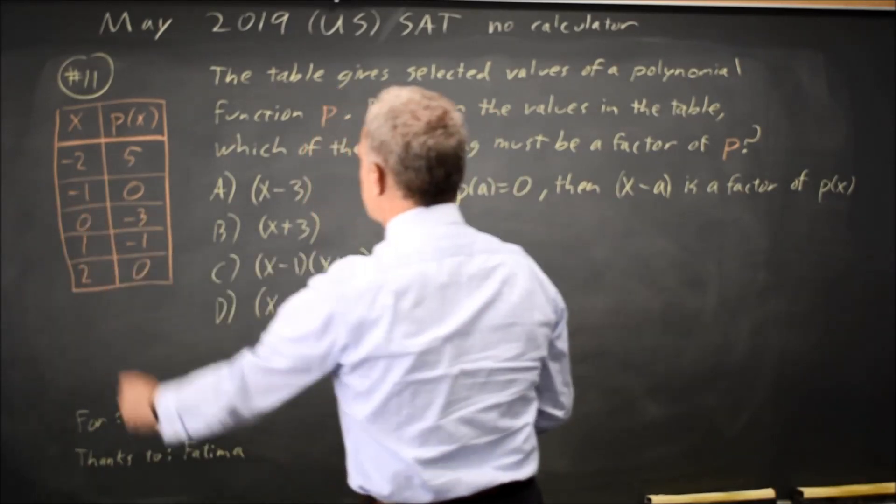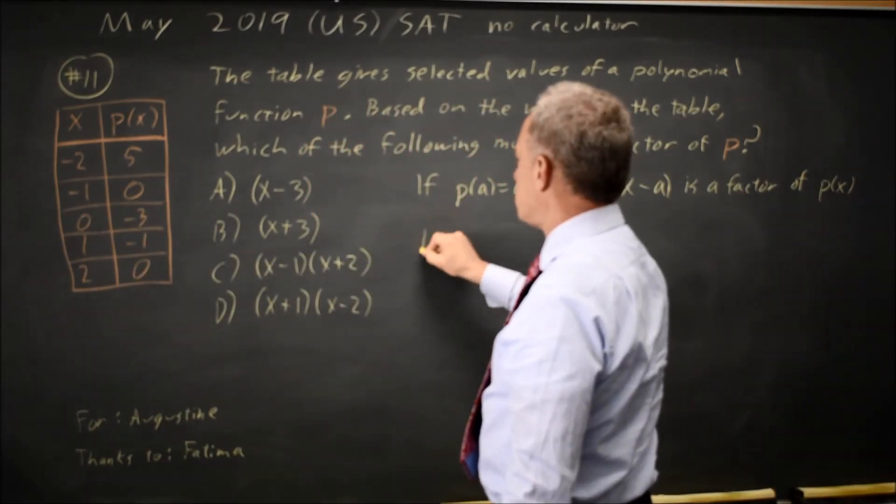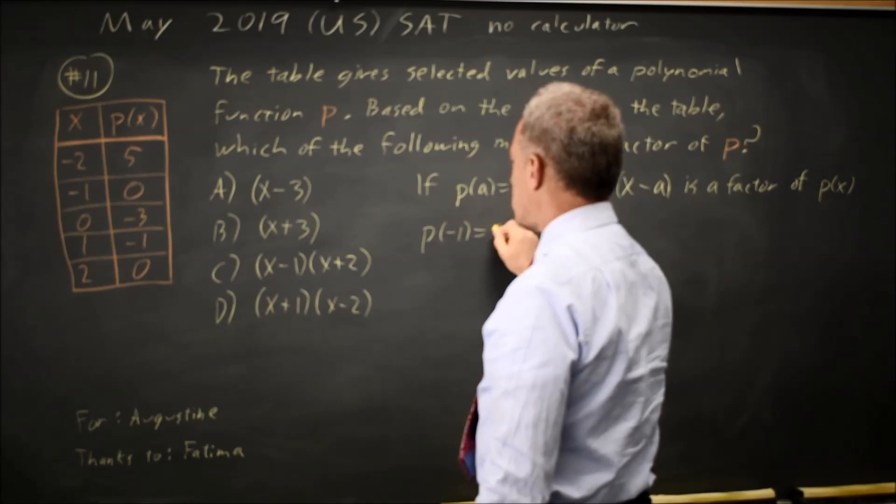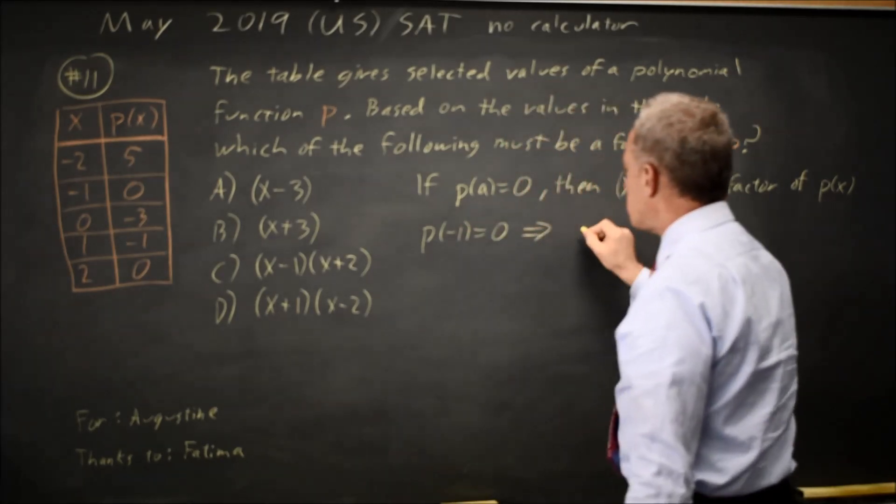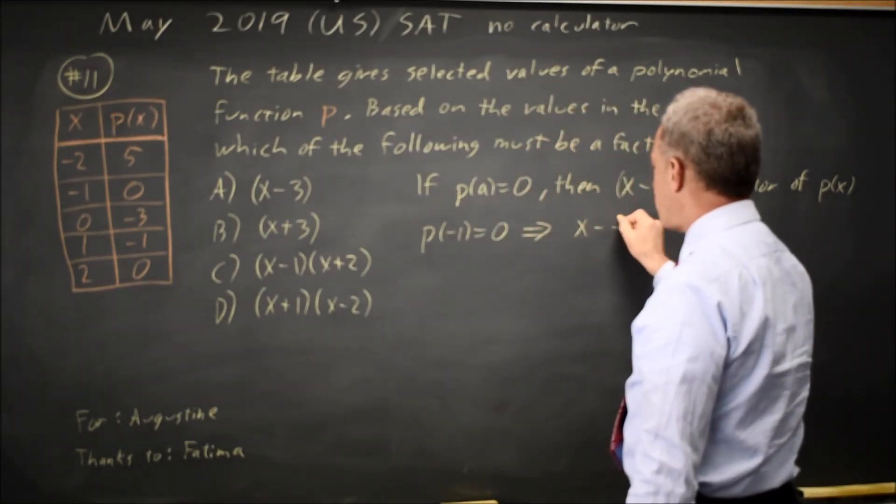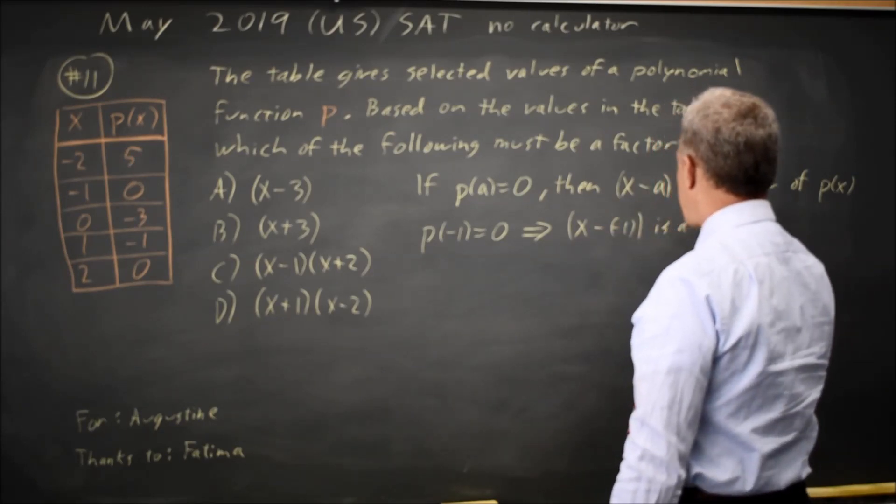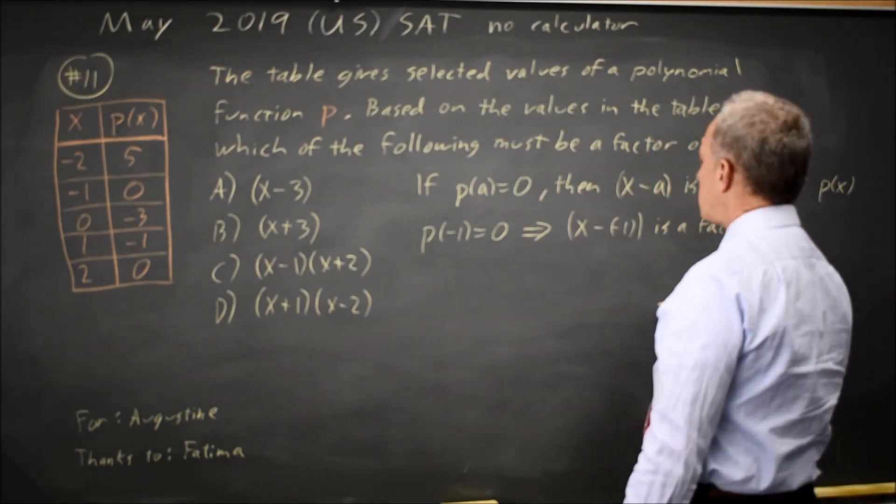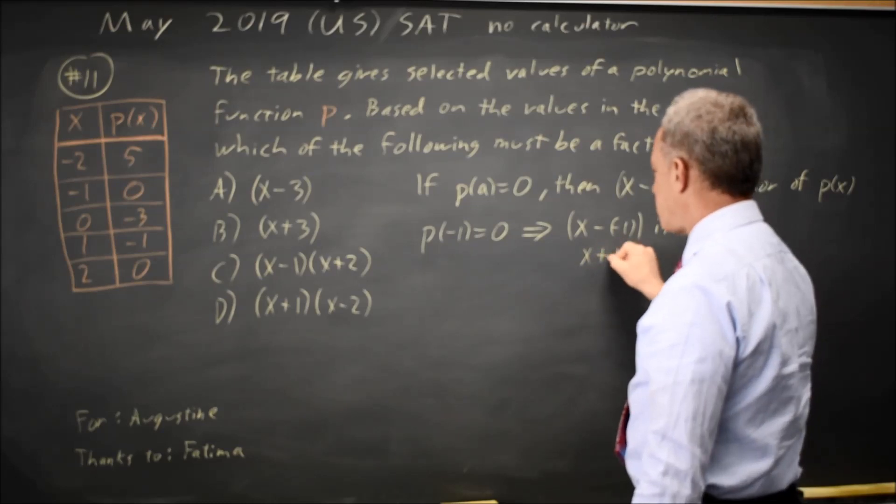Since P of negative 1 equals 0, we can conclude X minus negative 1 is a factor. And I'll write that as X minus negative 1 is X plus 1.